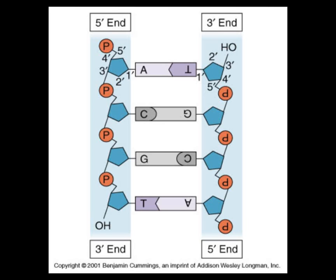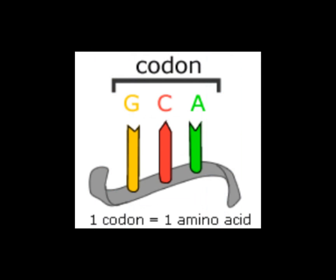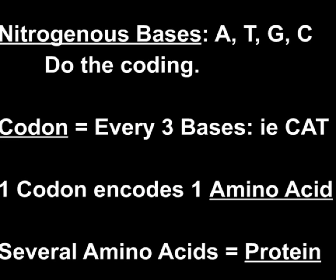Every three nitrogenous bases are collectively known as a codon. So one codon is equal to something like C-A-G, or G-A-C. Each codon encodes an amino acid, and multiple amino acids strung together encode a protein. Think of it as: every three DNA bases equals one amino acid, and many amino acids equal a protein. This is very simple and fundamental to biology.